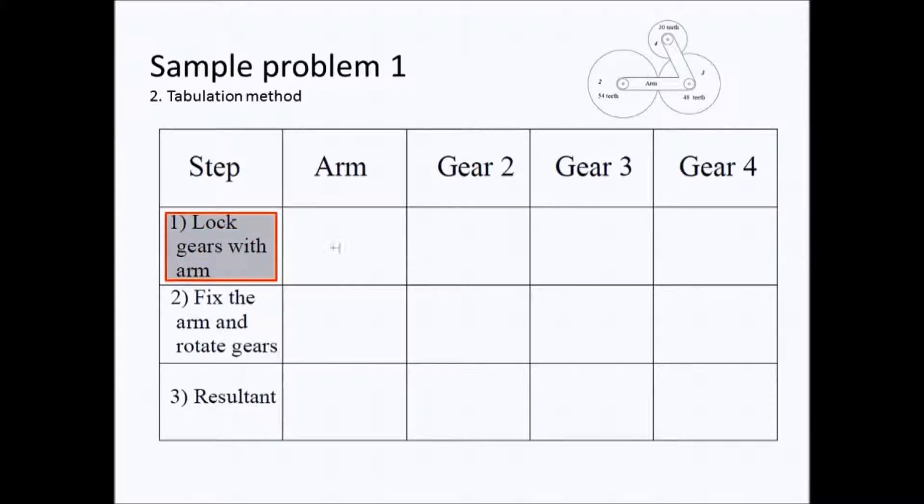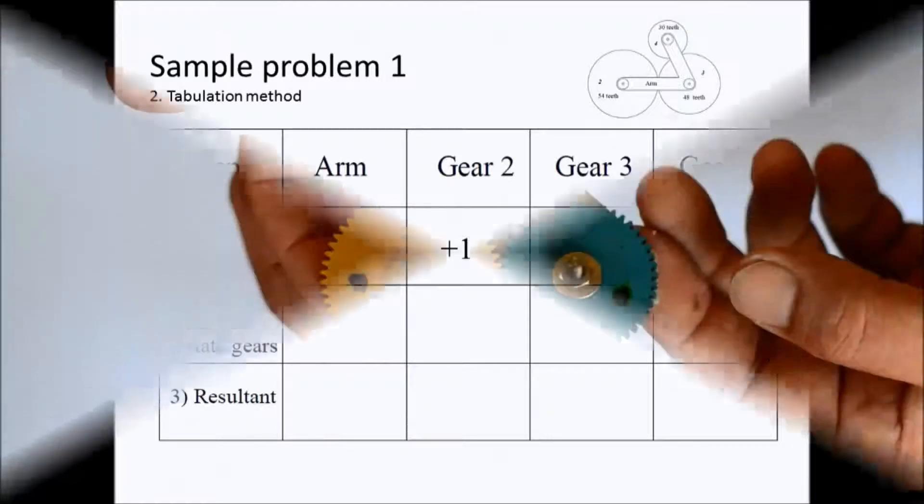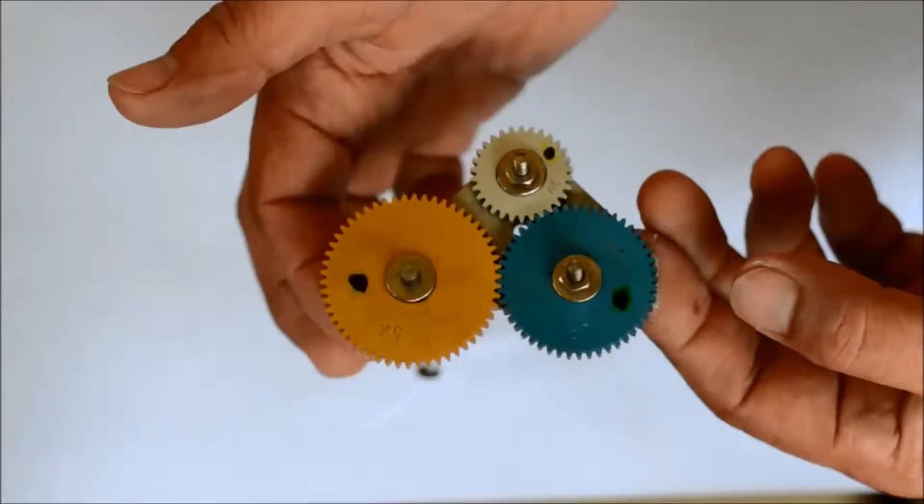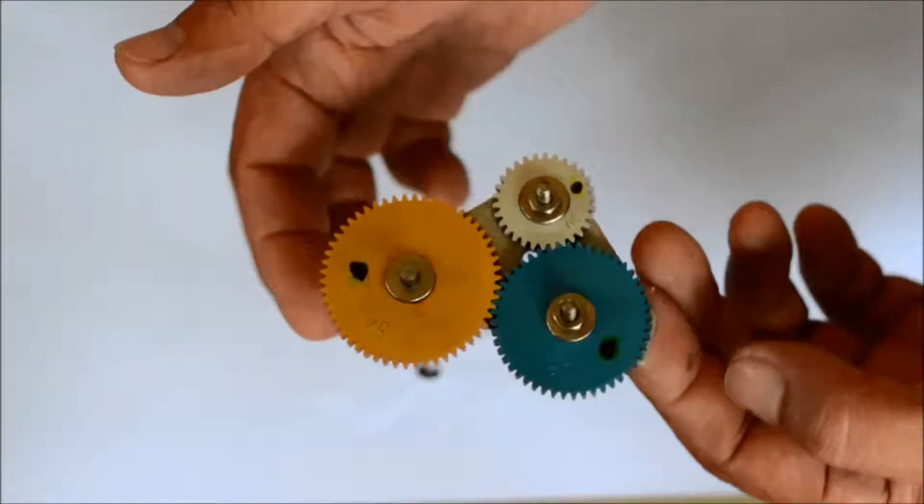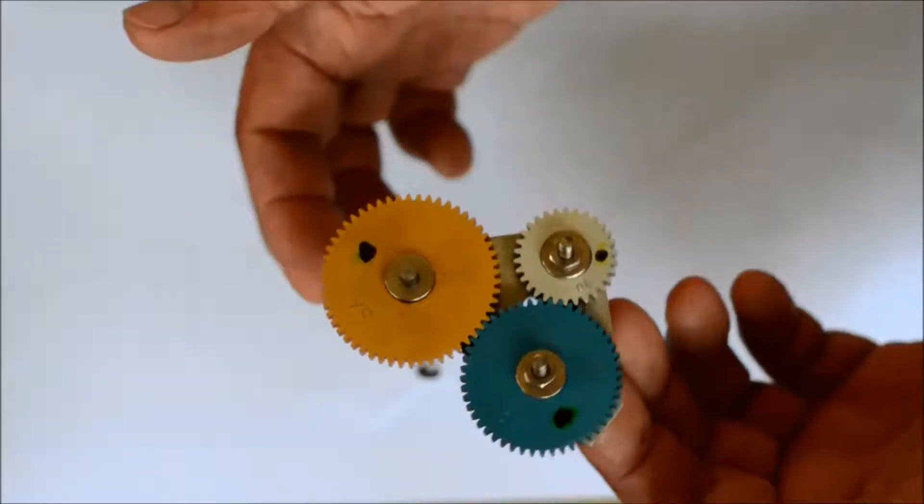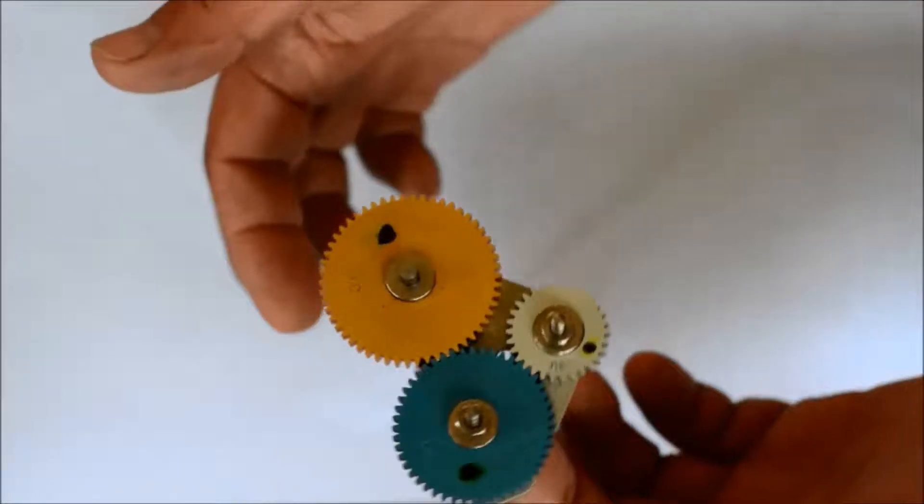As a first step we rotate the whole mechanism with the arm once, so we have to put these values. We can do it with the actual mechanism. We rotate the whole mechanism in the clockwise direction once.